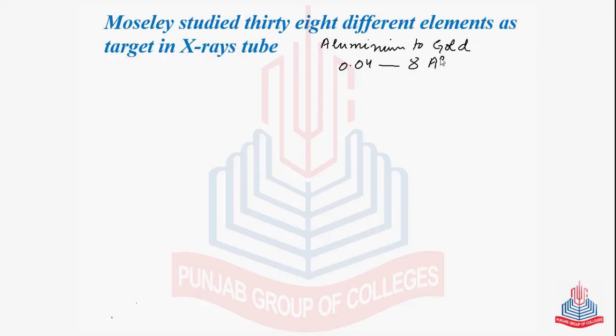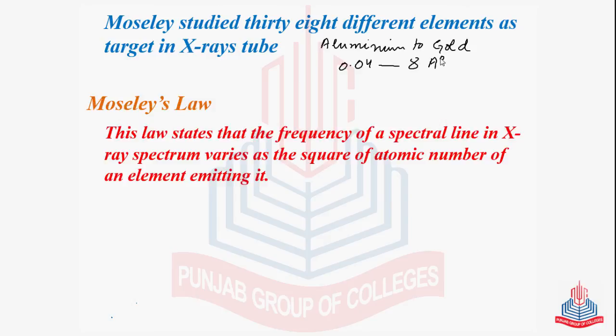And he formulated the Moseley law. The Moseley law is stated as the frequency of a spectral line in the X-ray spectrum varies as the square of the atomic number of an element emitting it. Moseley law can be shown as: the square root of the frequency equals A times Z minus B, where A is the proportionality constant and B is the screening constant.